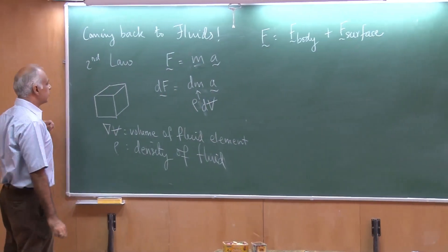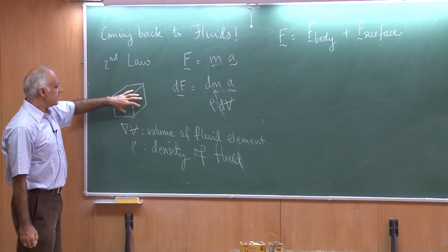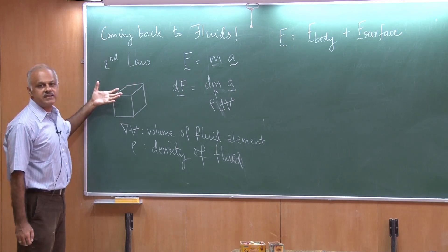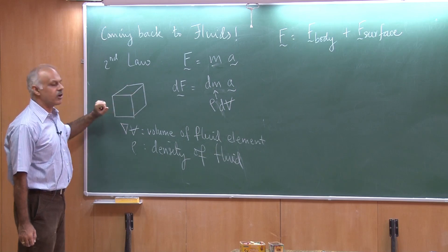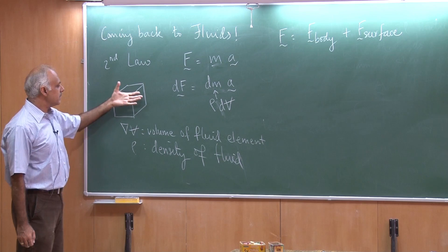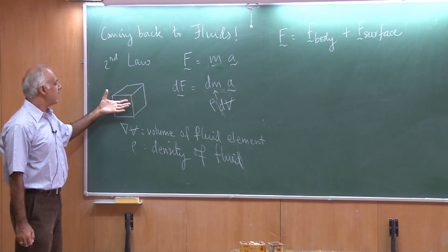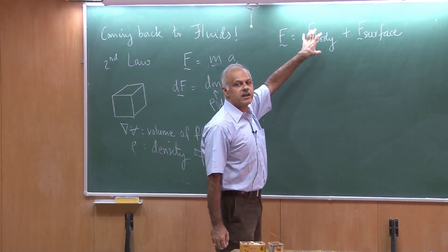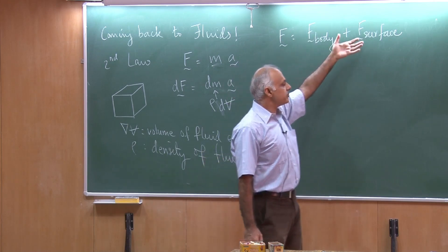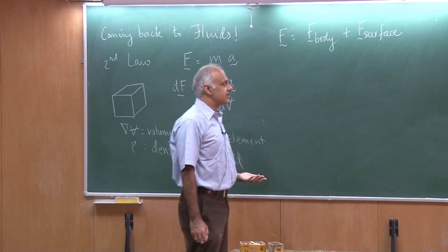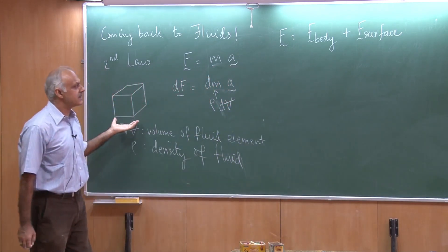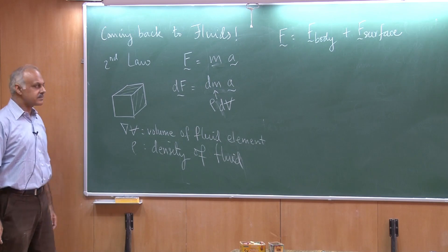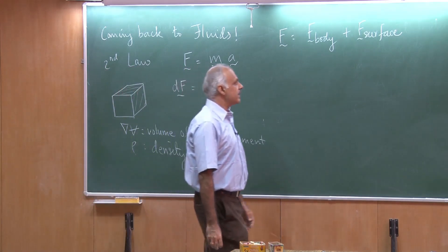There is a force on this fluid element that could occur because of some force that acts within the volume of this. For example, gravity — the weight of this object — or for example, an electrostatic force which could be because of some particles distributed in this volume. That would arise per unit mass or per unit volume of the body. But then there could be a surface force. For example, friction is a surface force; that is not related to the volume as such. The surface force would act on the surface of the body and would have to be accounted for in terms of an area.